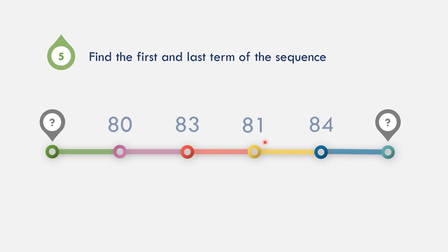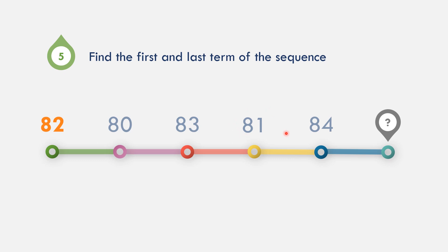83 minus 2 is 81. 81 plus 3 is 84. The pattern is: add 3, subtract 2, alternating. So working backwards, before 80 we subtract 2, meaning 82 minus 2 is 80. Continuing: 80 plus 3 is 83, minus 2 is 81, plus 3 is 84, minus 2 is 82. The first term is 82 and the last term is 82.